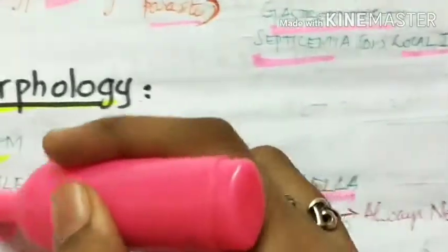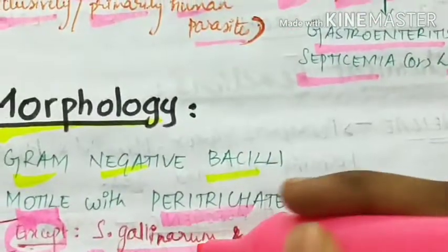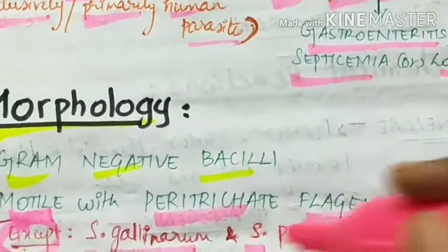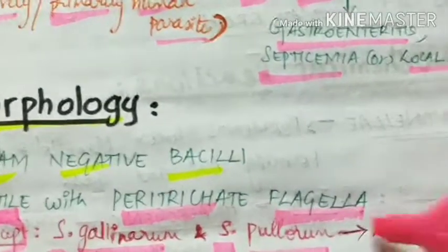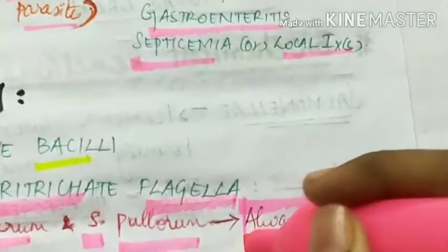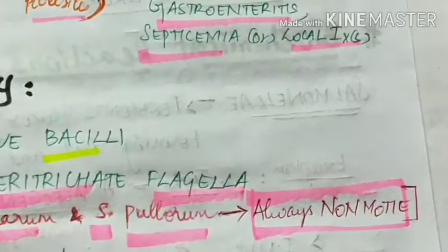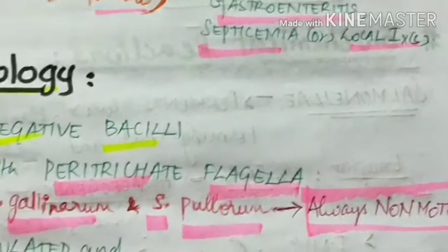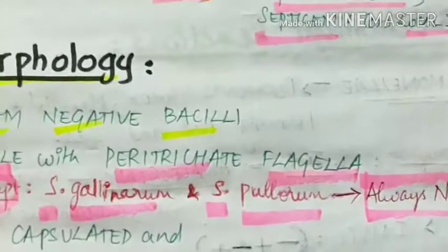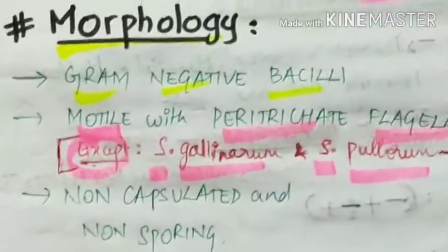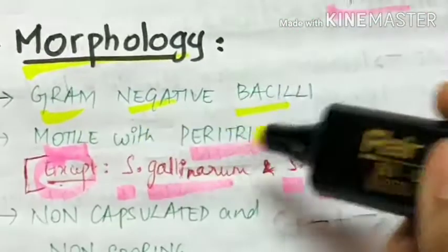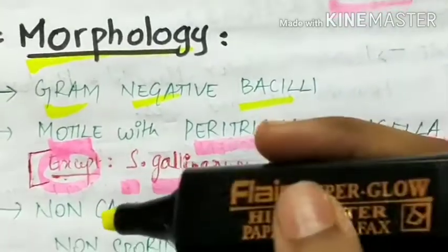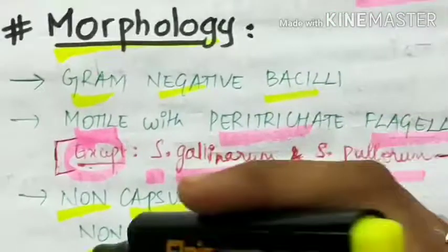Exception is Salmonella gallinarum and Salmonella pullorum. These two are always non-motile. Salmonella gallinarum and Salmonella pullorum are always non-motile, and the other species of Salmonella are motile with peritrichate flagella.